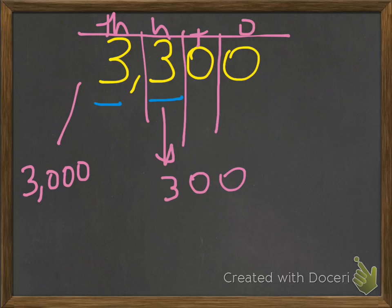So once again, just like in the problem before, this 3, the 300 times 10, will actually get you 3000. So again, this value 3000, the value of the first 3 is 10 times as great as the value of the second 3.